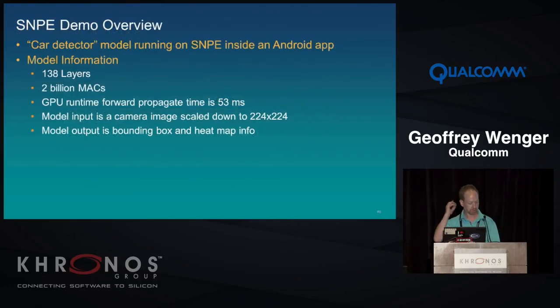Here's performance data for Snappy on three models. AlexNet (winner of ImageNet 2012) requires 724 million multiply-accumulates (about 1.5 gigaflops) per forward pass; its heavy use of fully-connected layers constrains performance. GoogLeNet (winner of ImageNet 2014) requires 1.5 billion multiply-accumulates (3 gigaflops). The Qualcomm Scenes network is 500 million multiply-accumulates (1 gigaflop), developed for Qualcomm's Scene Detect product and most highly optimized of the three.